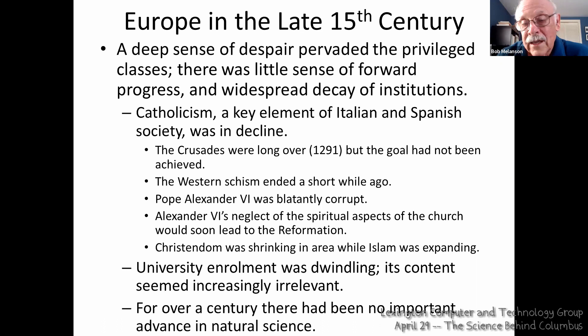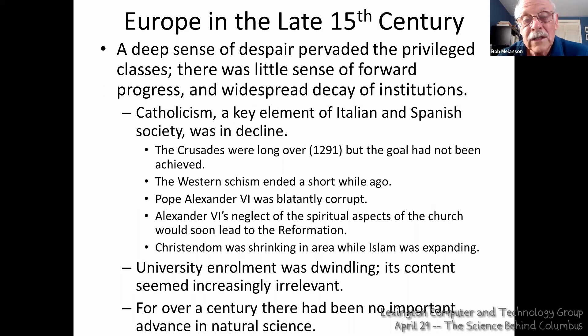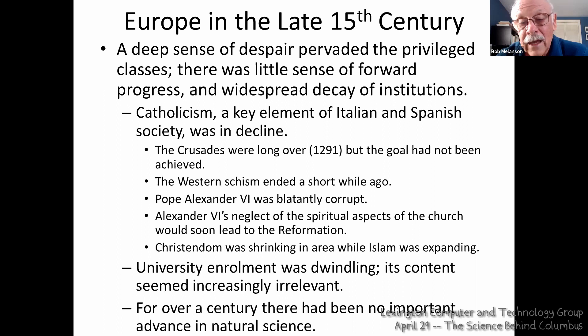The current pope, Alexander VI, was blatantly corrupt and ambitious — his mistresses and children abounded. However, at least there was only one pope. Alexander's neglect of the spiritual aspects would soon lead to the Protestant Reformation. Most importantly for our purposes, Christendom was shrinking while Islam, i.e. the Ottoman Empire, was expanding. At its height, Islam was knocking on the gates of Vienna. More to the point, this expansion was detrimental to the enormous profits for Genoa and Venice from the overland trade with the Far East. Columbus would most certainly have been aware of this, as he was born in Genoa.